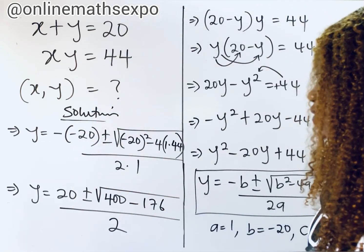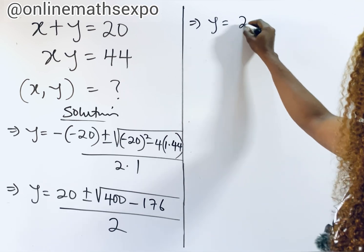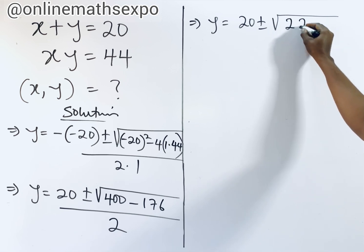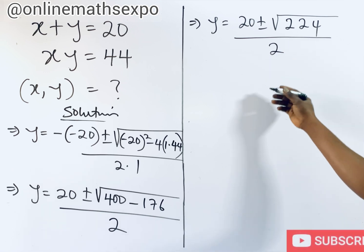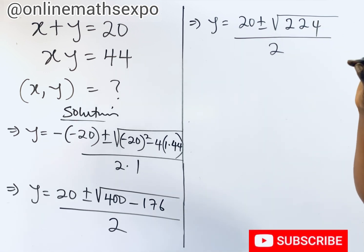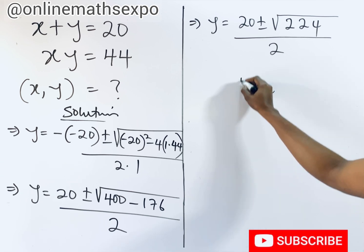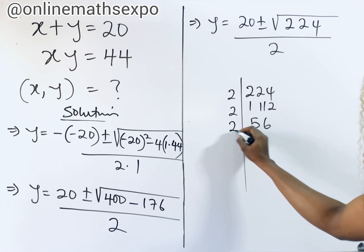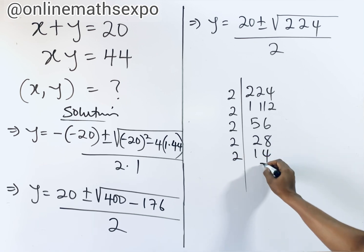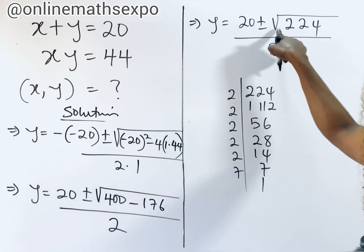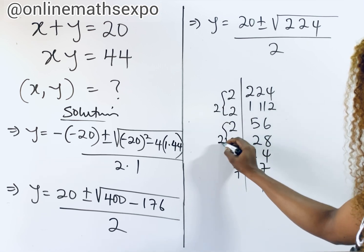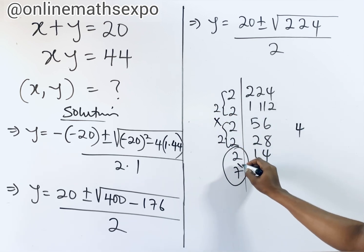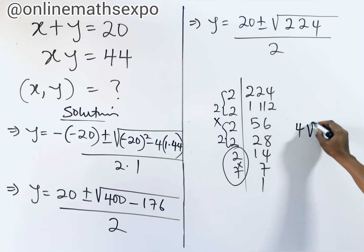Let's continue simplifying. We have y equals 20 plus or minus the square root of 224, divided by 2. Now we want to find the perfect square factor in 224. Factoring 224: 2 times 2 times 2 times 2 times 14. Since it's a square root, we pair the 2s. Two 2s pair to give a factor of 4 outside the root, and 14 remains inside. So the square root of 224 equals 4 root 14.